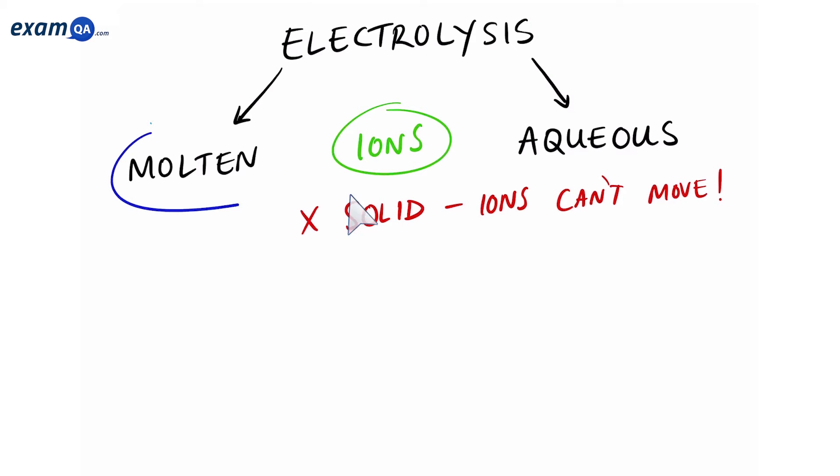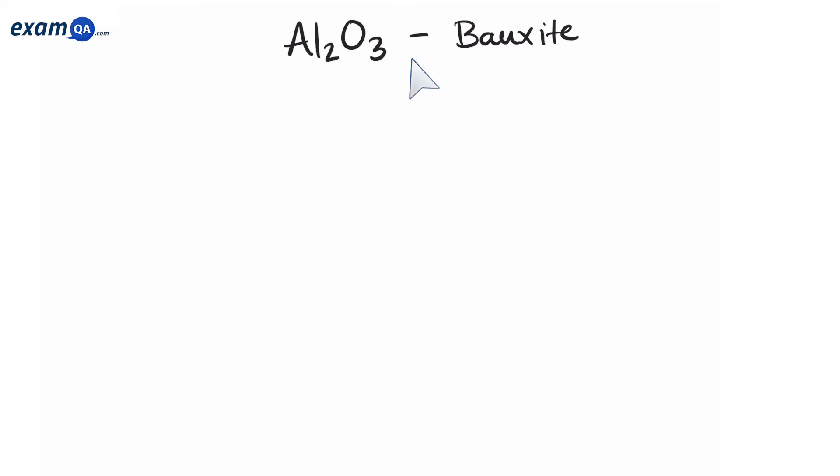Let's start by looking at molten electrolysis. Aluminium oxide, also known as bauxite, is a common ore that contains aluminium. Aluminium is an example of a metal that can only be extracted by electrolysis. The reason behind that is because we can't do reduction with carbon, as it is more reactive than carbon.